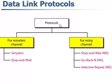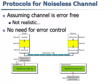Next, data link protocols. There are two types: one is noiseless channel and another is noisy channel. Noiseless channel is divided into simplest and stop-and-wait. This video will be talking about the simplest protocol; the next video will talk about stop-and-wait and the rest of the protocols. In the noiseless channel, we take two assumptions: error-free transmission and there is no need for error control.